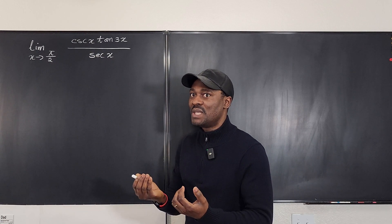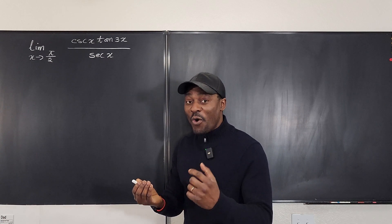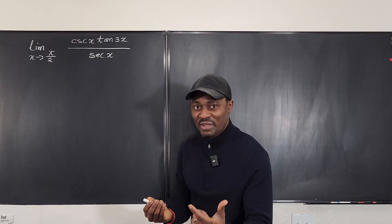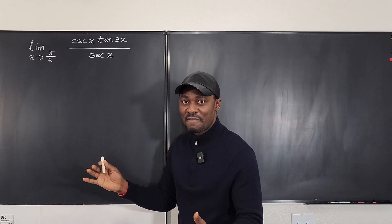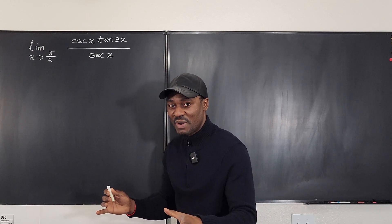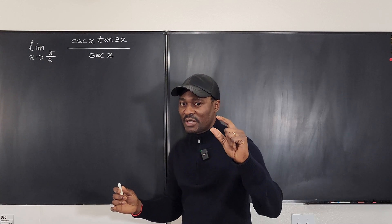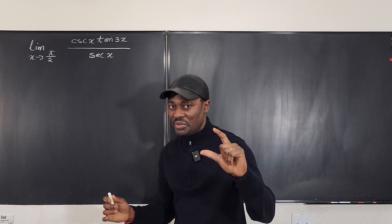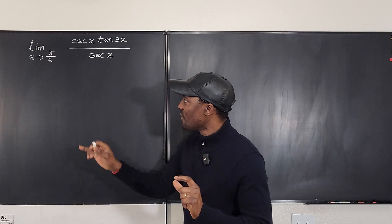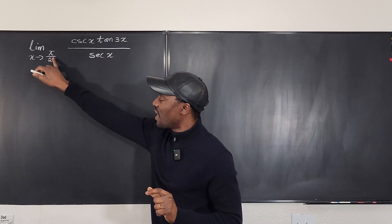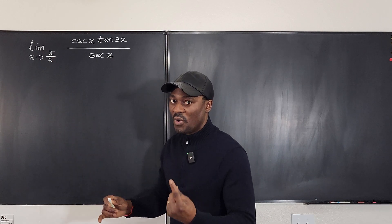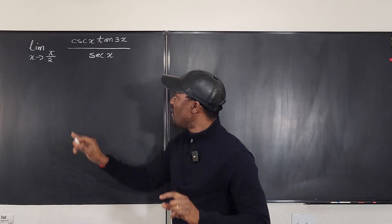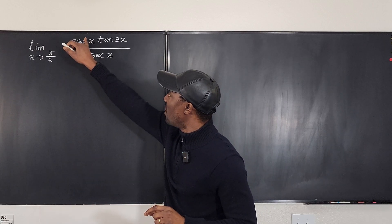So what would cosecant of π/2 be? Remember that cosecant is the reciprocal of sine. We know that sine of π/2 is 1, so the reciprocal of 1 is 1. So cosecant of π/2 equals 1.